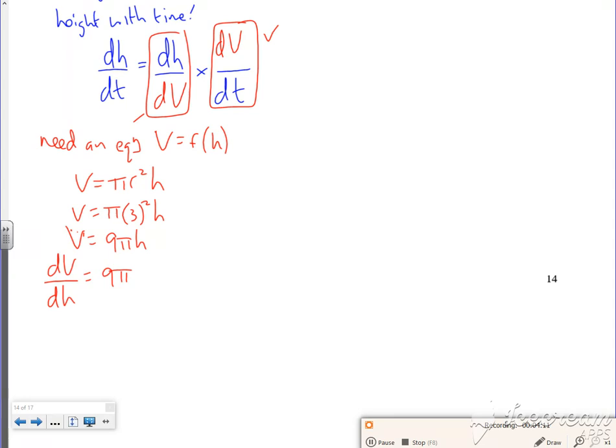dV by dH is 9 pi. I want dH by dV, so that's 1 over it. So this little bit now, I've worked it out, it's going to be 1 over 9 pi, because I want dH by dV.